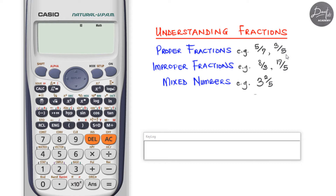This is the fraction button — press that to input a fraction. To input three over five, press the fraction button, enter the numerator three, press the next button to move to the denominator, enter five, and press equal. You can see three over five shown on the calculator. Follow along with your own calculator — don't just watch, practice together.